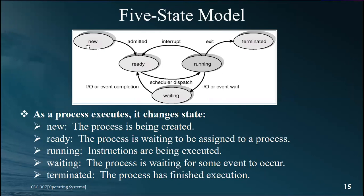In the five-state model, we have: new, ready, running, waiting, and terminated. New means the process is being created; terminated means it is done. The main operation happens in the three middle states: ready, running, and waiting. Ready means the process has all the resources it needs and is ready to execute — it just needs CPU time, but the CPU is occupied by another process. For example, if 10 students want to ask questions, each must wait their turn since the teacher can only answer one at a time.